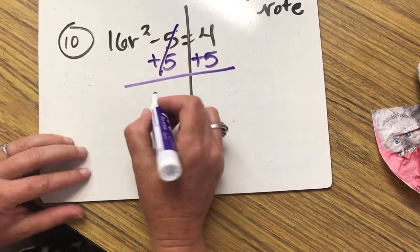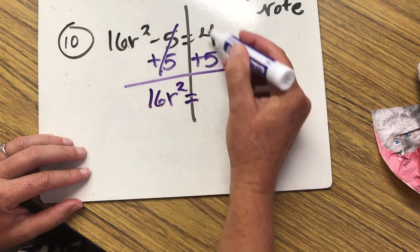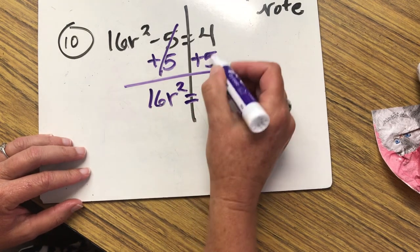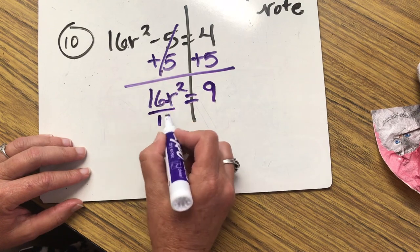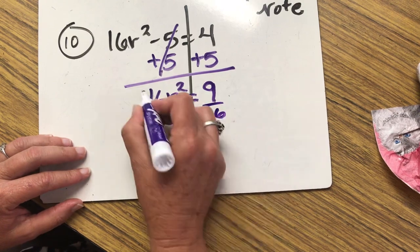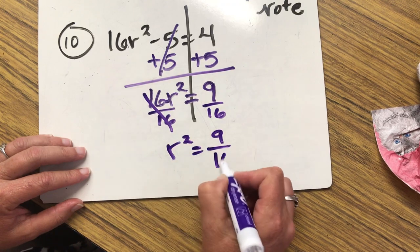Now we can drop our variable down with its little coefficient of 16 in the front. 5 plus 4 is 9. The opposite of multiply is to divide. R squared equals 9 all over 16.